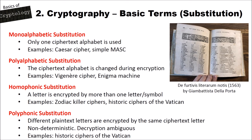With the Vigenère cipher and the Enigma machine, we also had videos on this channel. Then we have the homophonic substitution ciphers. With a homophonic substitution, a letter is encrypted by more than one letter or symbol — so A is encrypted with 01 and 05, B with 09 and 07, and so on. Examples for this are the Zodiac Killer ciphers, and historic ciphers used in the Vatican. Then we have polyphonic substitution ciphers, where different plaintext letters are encrypted by the same ciphertext letter. This makes these ciphers problematic because they are non-deterministic and decryption is ambiguous — when you encrypt both A and B with X, you don't know during decryption if the X was an A or B without knowing the context of surrounding letters.